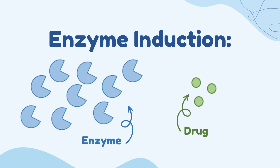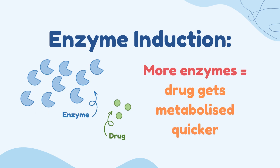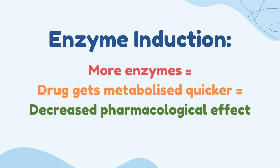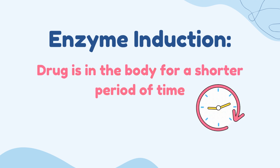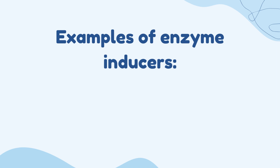If there are more CYP enzymes, then the drug would get metabolised quicker. This leads to a decreased pharmacological effect because there's not enough drug in the body, as it remains in the body for a shorter period of time. Some examples of enzyme inducers include the following.